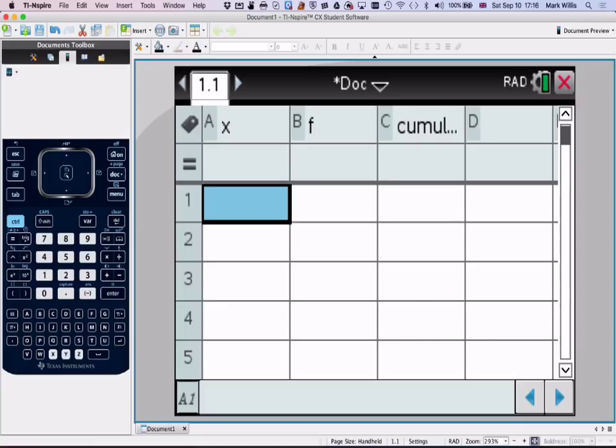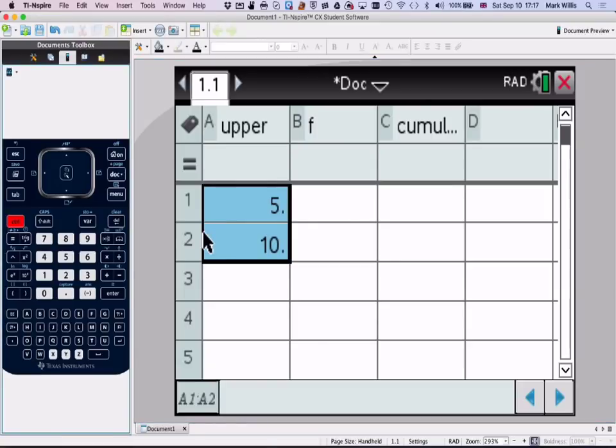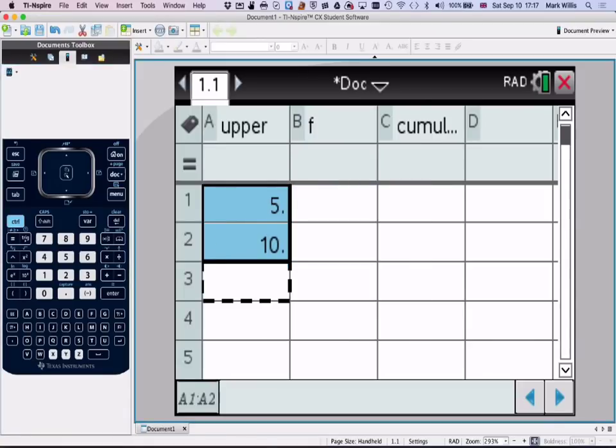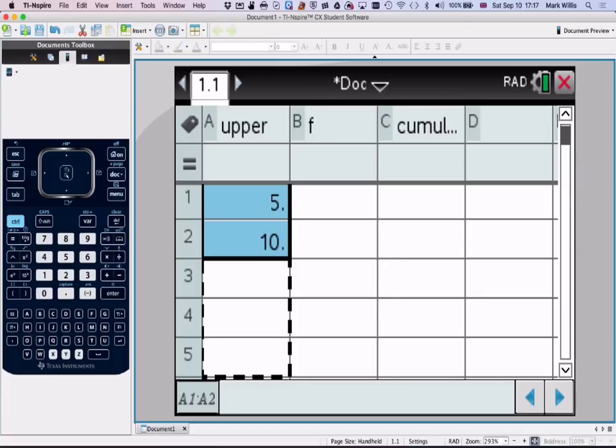So here we want to put the upper class value. So we're going to put in 5, 10. But we don't need to do any more. Just highlight those. Do control, menu, fill, and then go down very carefully. We only want to 7. This is a little bit tricky. And then press enter. That puts in all the upper class values.